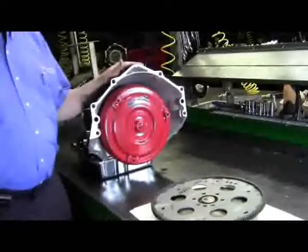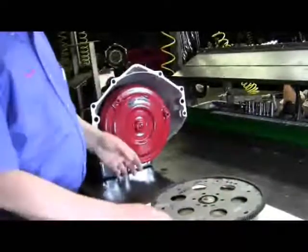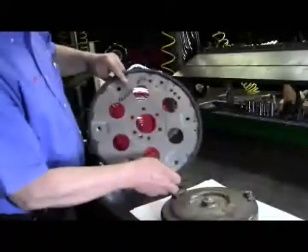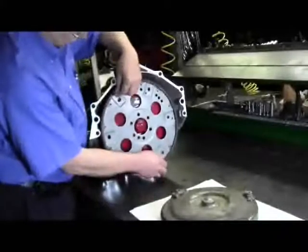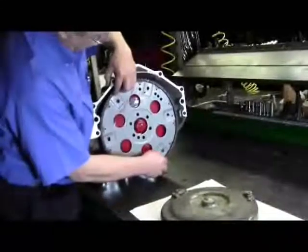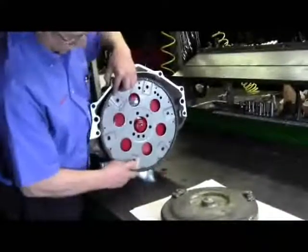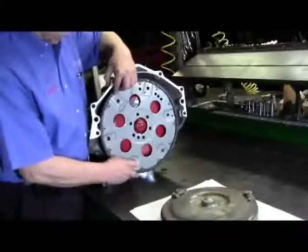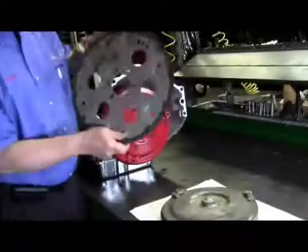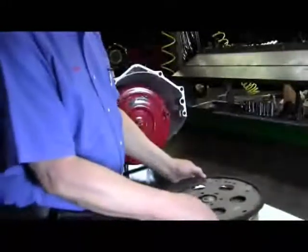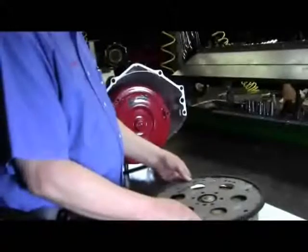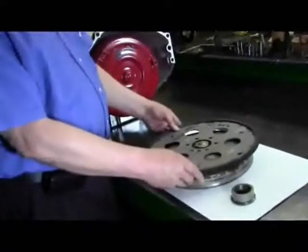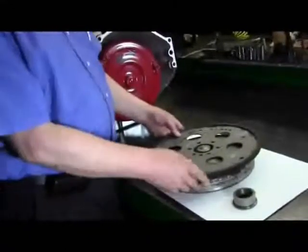One of the next things we want to check is the flywheel. We want to make sure that the flywheel lines up with the holes in the torque converter. If these are not lined up properly, they need to be drilled. And the easiest way to do that is you can take the flywheel, just lay it on your torque converter, line everything up, and drill your new holes.